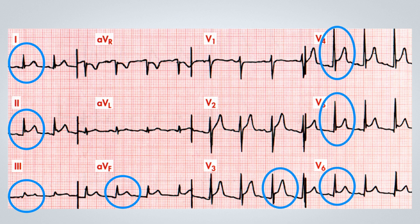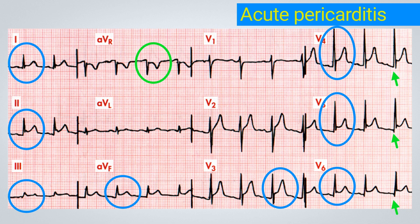Additionally, we can observe a depression of the ST segment in aVR, associated with an elevation of the PR segment in aVR and a depression of the PR segment, particularly in the lateral wall from V4 to V6. This case is highly consistent with an acute pericarditis presentation, as there is elevation of the ST segment in almost all the walls, except for aVR, where we have a depression.